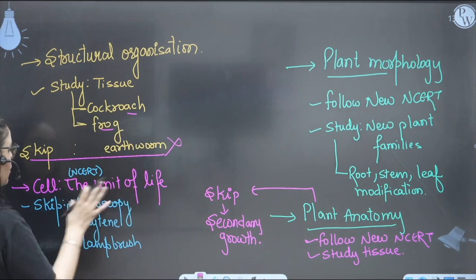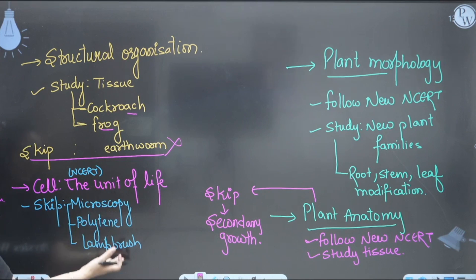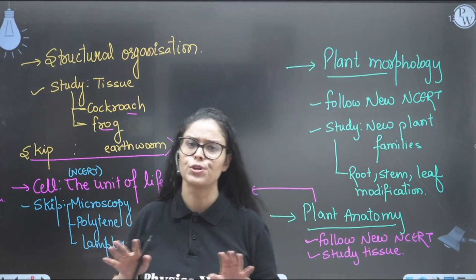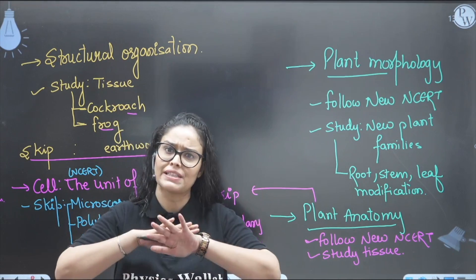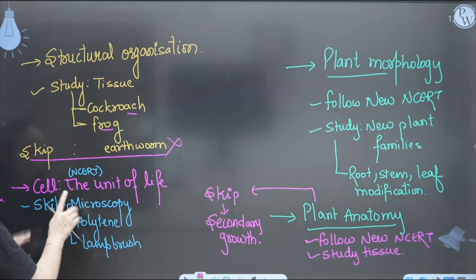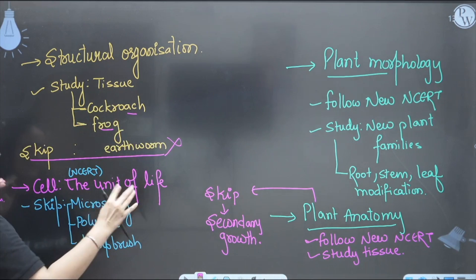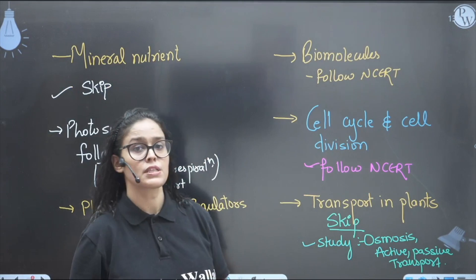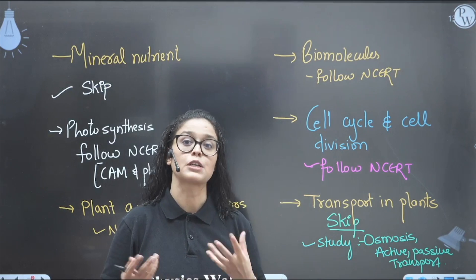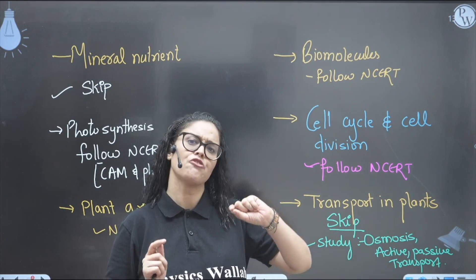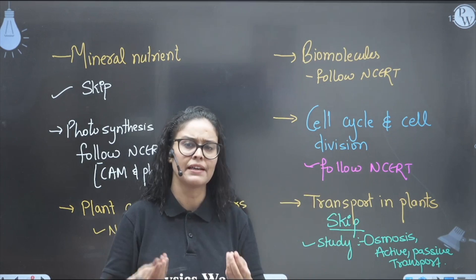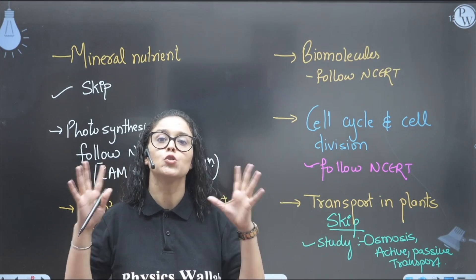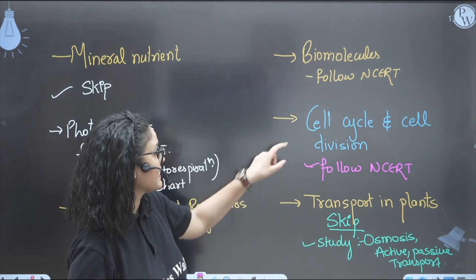For the cell - the unit of life - follow NCERT. You can skip microscopy topics like polytene and lampbrush chromosomes because questions are never asked from those. Follow NCERT since the new NCERT covers everything in a concise way, which is what's required for the exam. For biomolecules, follow NCERT, but to understand this chapter your teacher will take you a little beyond NCERT for concept building. This applies to all chapters discussed.